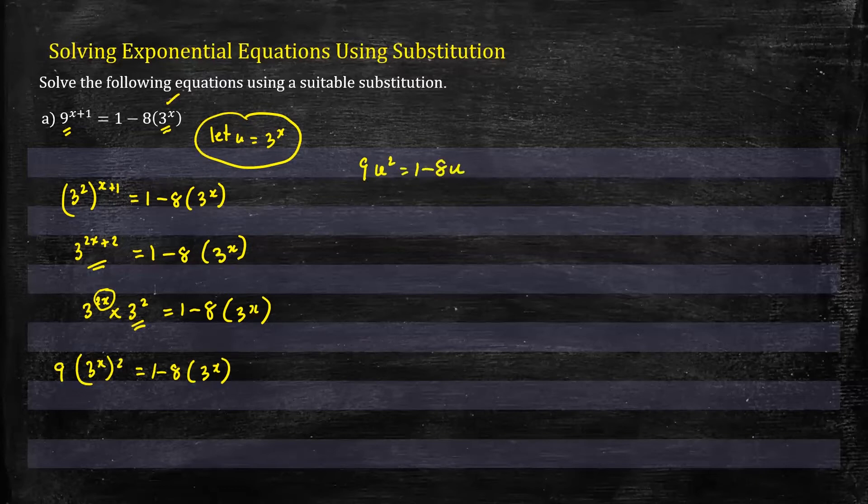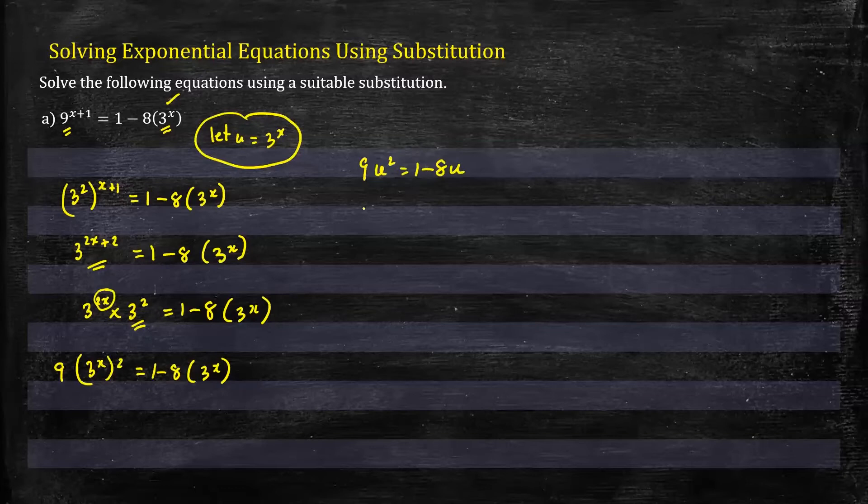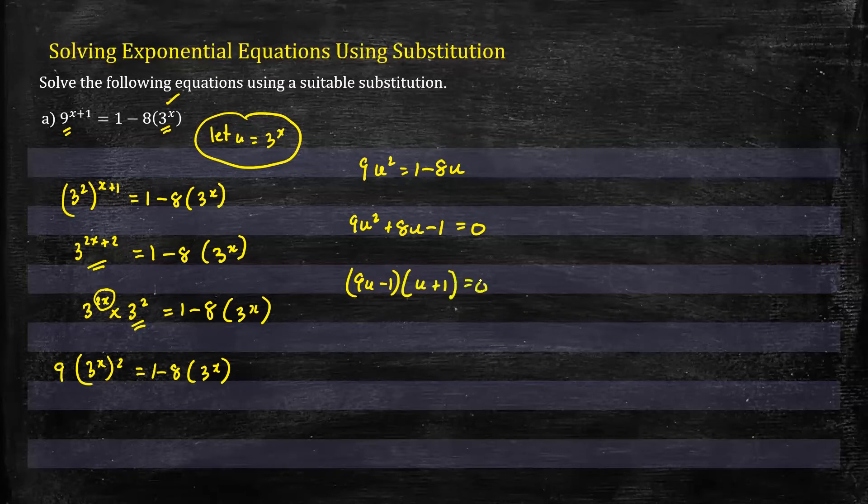So we'll have 9u squared equals 1 minus 8u. This resembles a quadratic equation, so let's rearrange it. We have 9u squared plus 8u minus 1 equals 0. And when we factorize that we'll get (9u minus 1)(u plus 1) equals 0.